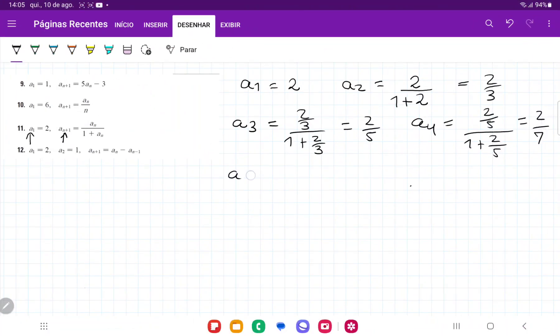And lastly, a5, we're going to have the previous one, so 2 sevenths over 1 plus 2 sevenths, and that is going to give us 2 ninths.